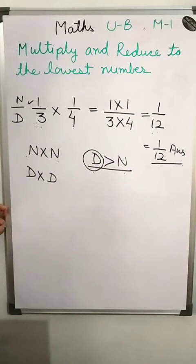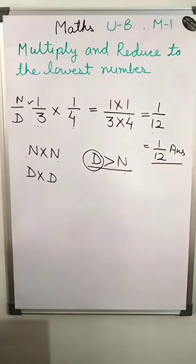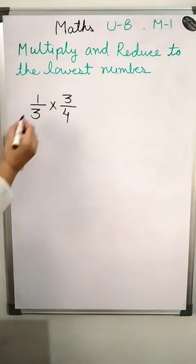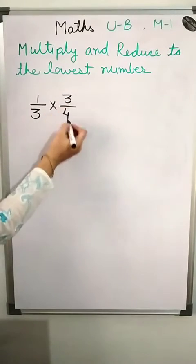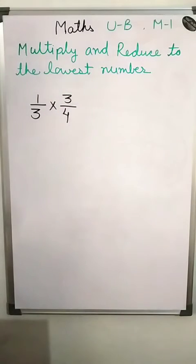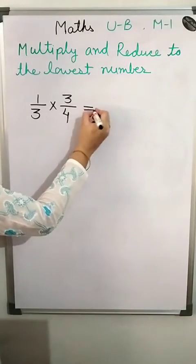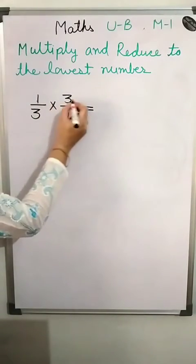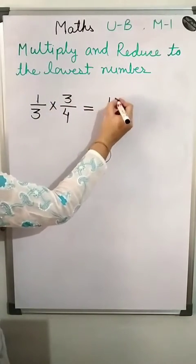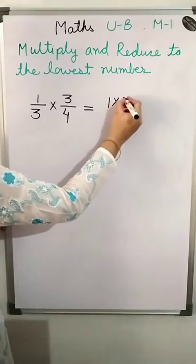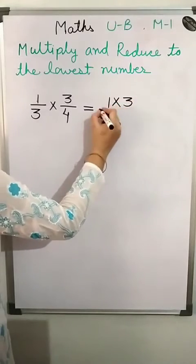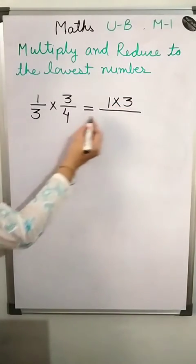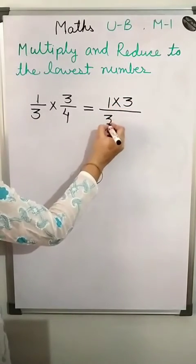I'll explain one more question to clarify. The question is 1/3 multiplied by 3/4. As I told you, you multiply numerator to numerator — 1 into 3 — and then denominator to denominator — 3 into 4.